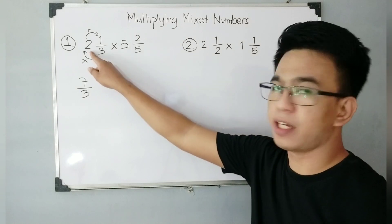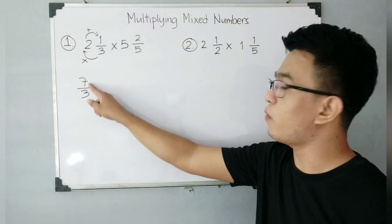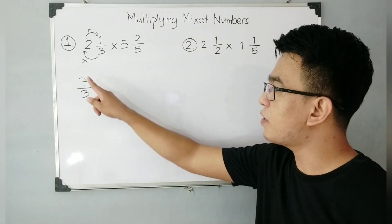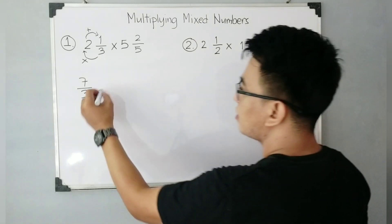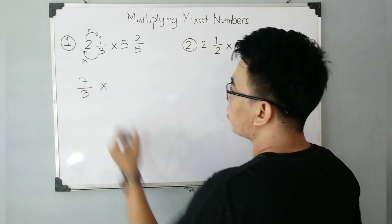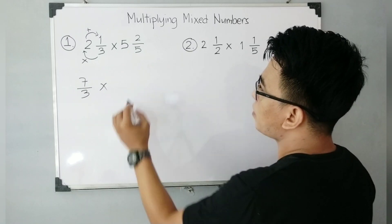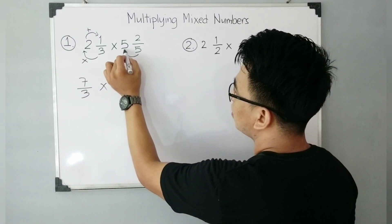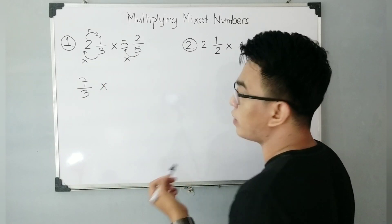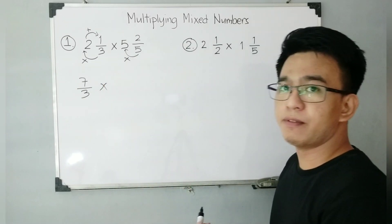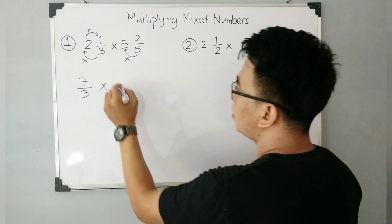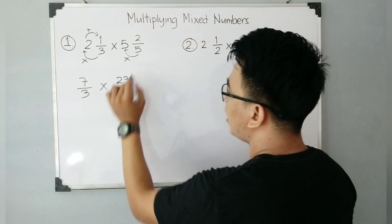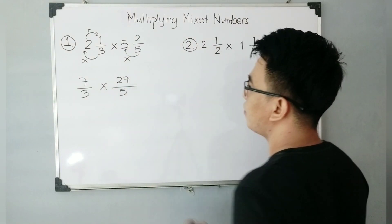Again: 2 times 3 is 6, plus 1 gives you 7, and copy your denominator. That gives you 7 over 3. Now copy your operation and apply the same process to convert the second mixed number. 5 times 5 gives you 25, plus 2 is 27. Copy your denominator, which is 5. So the second mixed number converts to 27 over 5.